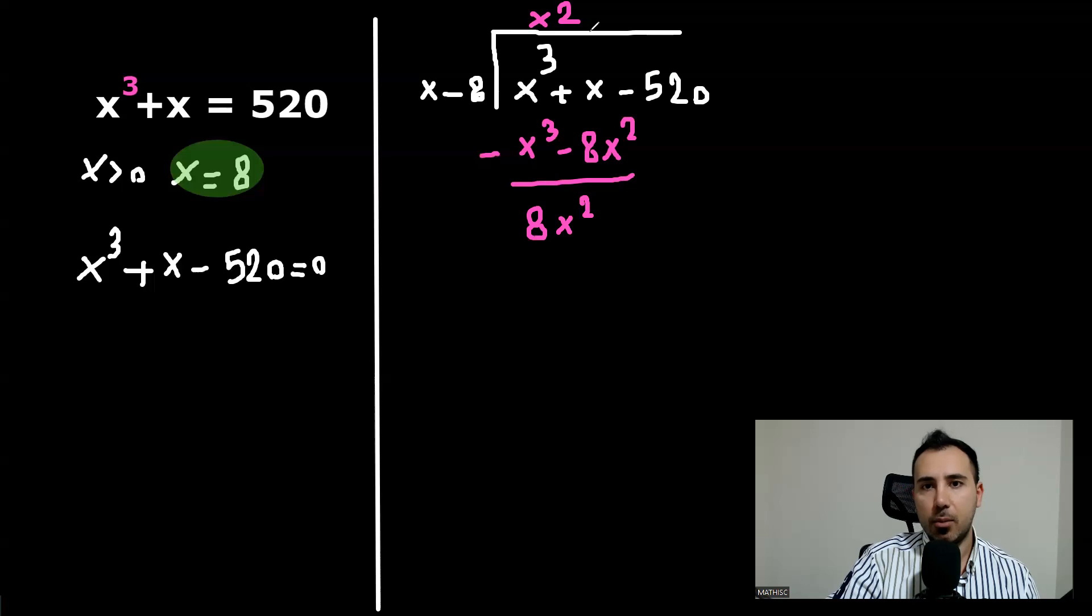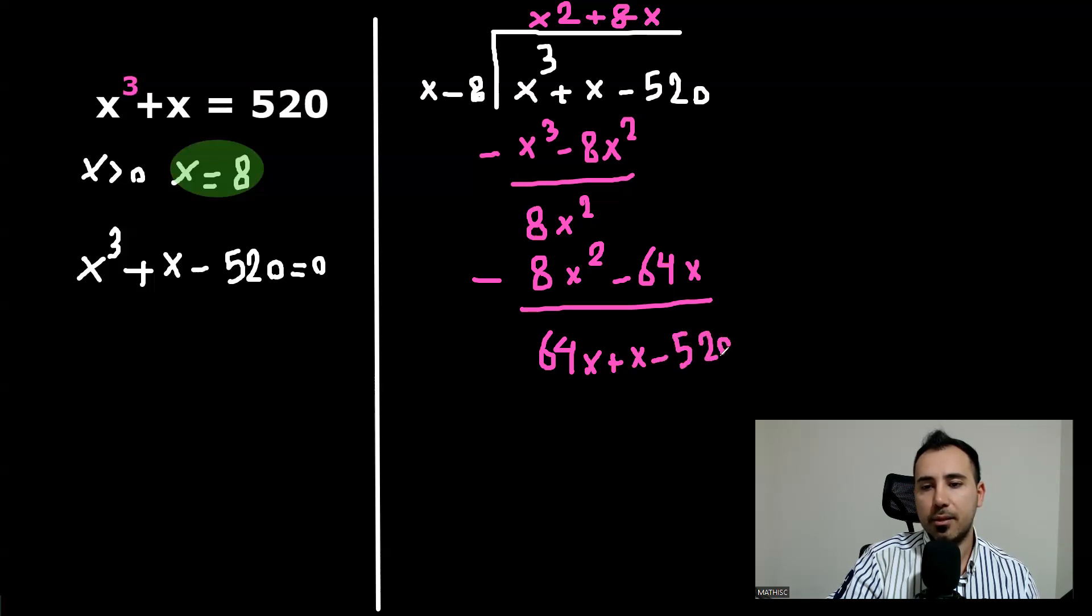To get rid of this, I'm going to write positive eight x. Why? Because this multiplied by x will create the same thing. And now these two together will create negative 64x. We're going to subtract. When we subtract, these two will be gone. Negative negative will be positive. We'll have 64x. Remember, we didn't use these two. I'm going to use them now. Plus x minus 520, which will be 65x minus 520.